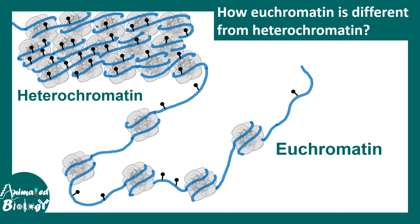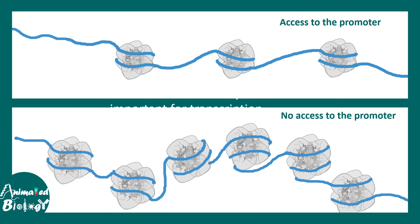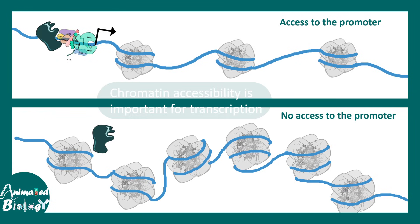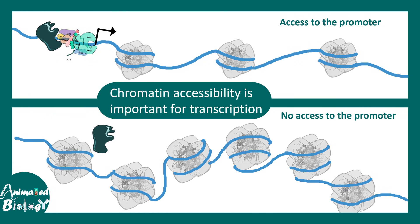Now, there are other aspects of difference such as methylation. Hypermethylated regions are mostly associated with heterochromatin, whereas hypomethylated ones are associated with euchromatin. Overall, accessibility in the chromatin is super important for transcription — if the transcription machinery doesn't get access to the chromosome, how would transcription happen?